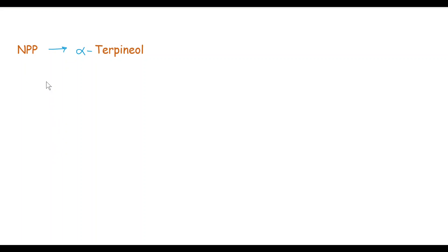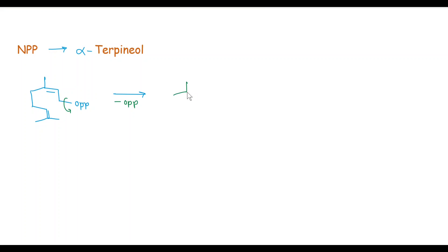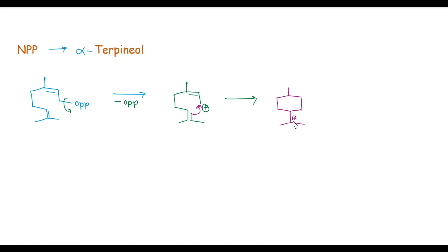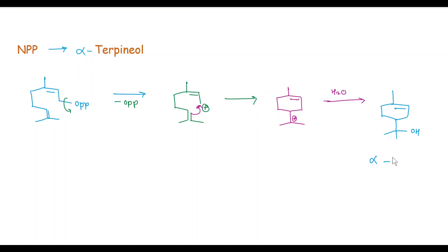Next we will see the synthesis of alpha-terpineol from NPP. In the first step, loss of OPP from NPP gives an allylic cation. In the next step, the double bond attacks on the electron-deficient carbon atom and we get a six-membered cyclic ring with a positive charge and a double bond. In the next step, addition of a water molecule takes place and we get alpha-terpineol.